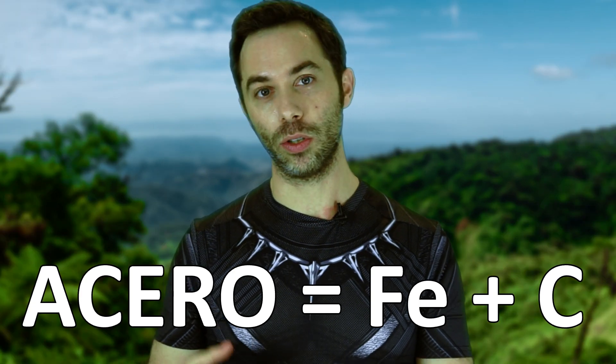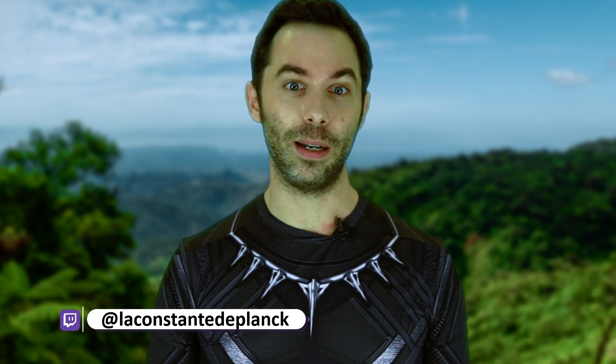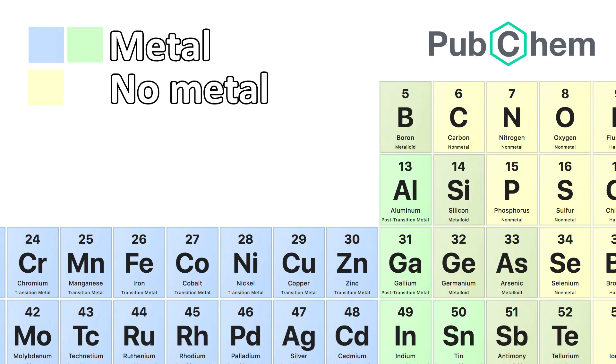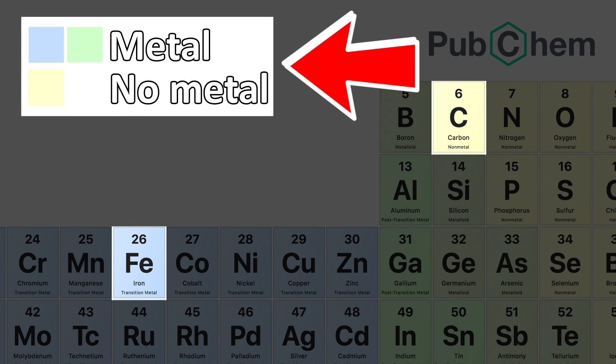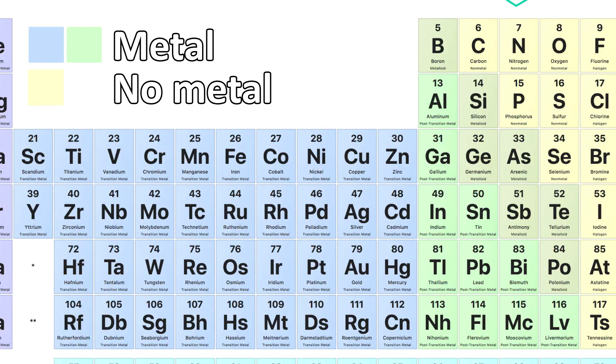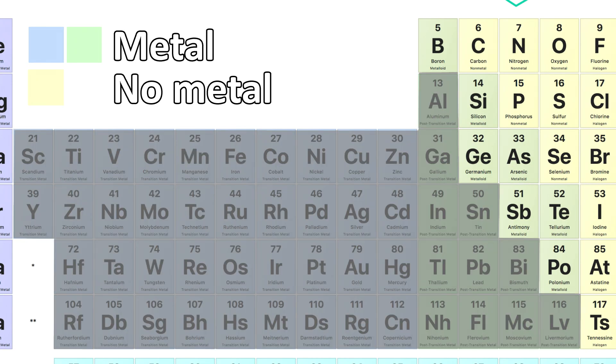En el caso del acero, está compuesto por hierro y carbono. Entonces, ¿puede existir el vibranium? En el universo Marvel se dice que el vibranium es un metal. ¿Es el acero un metal? Claro que no. El acero, como ya hemos dicho, está compuesto por hierro y carbono. El hierro es un metal, pero no lo es el carbono. Luego el acero no es un metal. Como veis, el vibranium tampoco aparece como elemento, por lo que de existir tampoco sería un metal. Los metales son todos estos elementos marcados en gris, que son la mayoría, como podéis ver. Tenéis además del hierro otros muy conocidos, como el aluminio, el cobre o el oro.